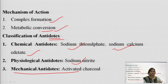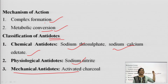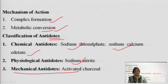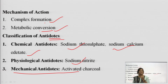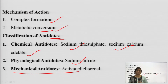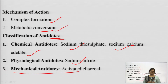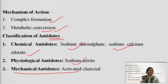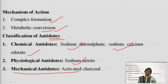According to mechanism of action, antidotes are classified by complex formation — forming a removable or soluble or insoluble complex with the poison which can be easily removed, converting poison into an inactive state. Or by metabolic conversion — converting the poison moiety into a form which is non-toxic or less toxic towards our body. Based on chemical types they are classified into chemical, physiological, and mechanical antidotes.